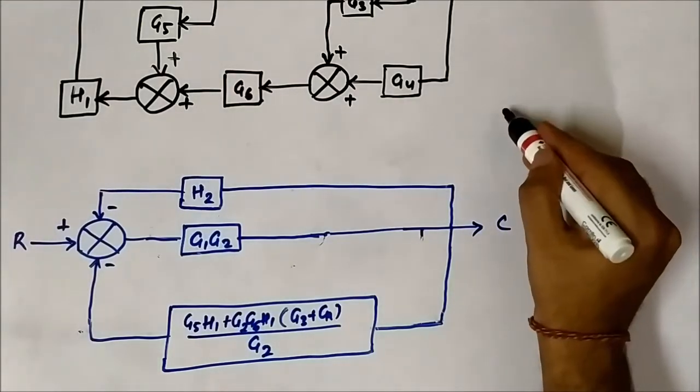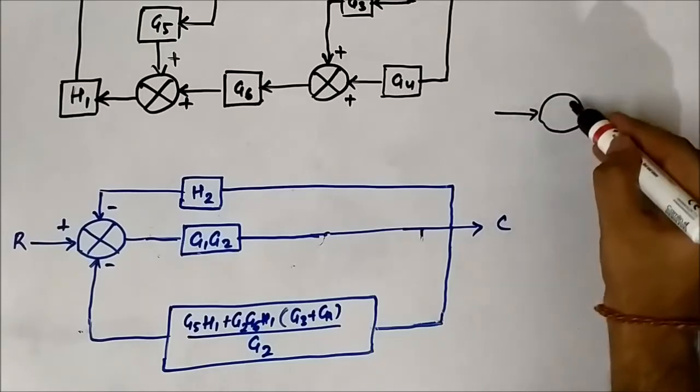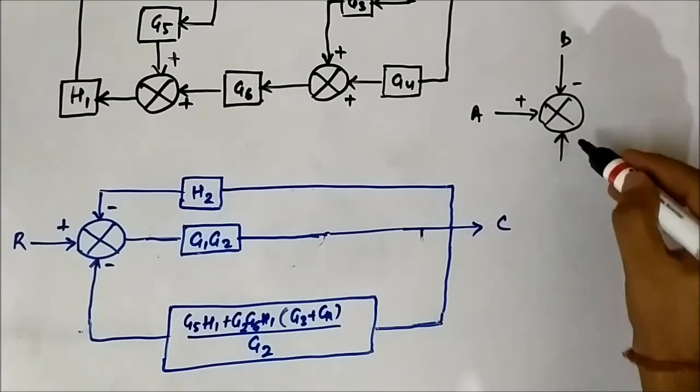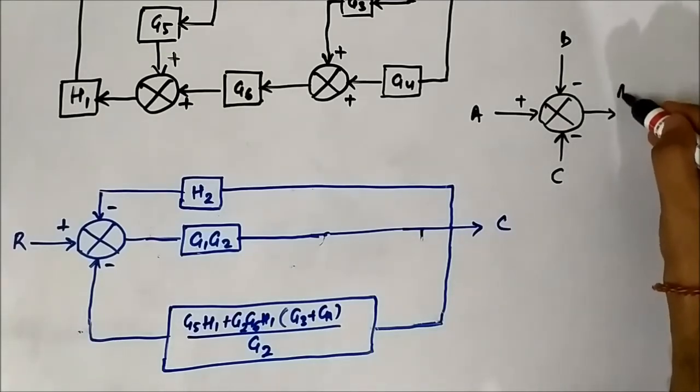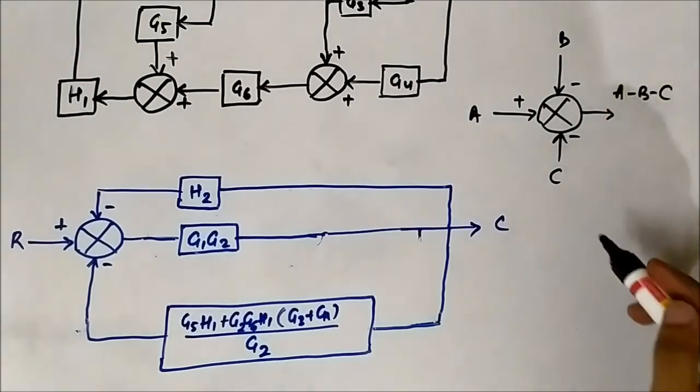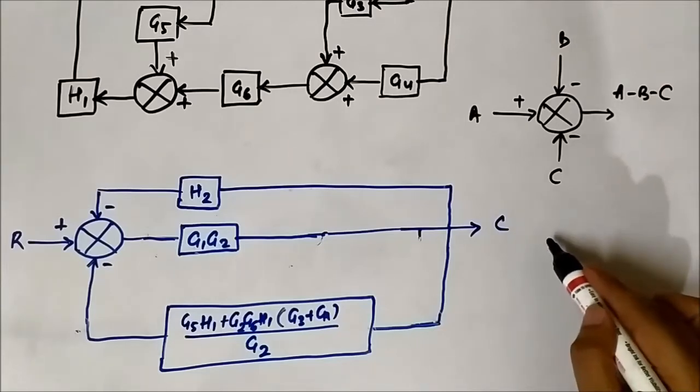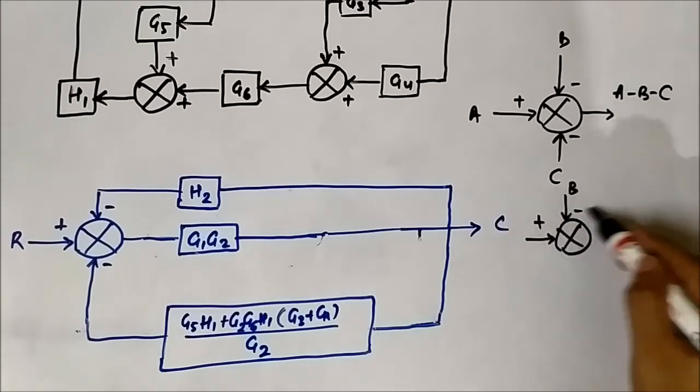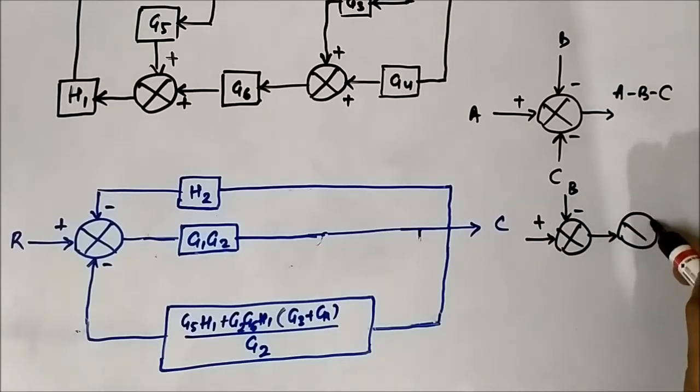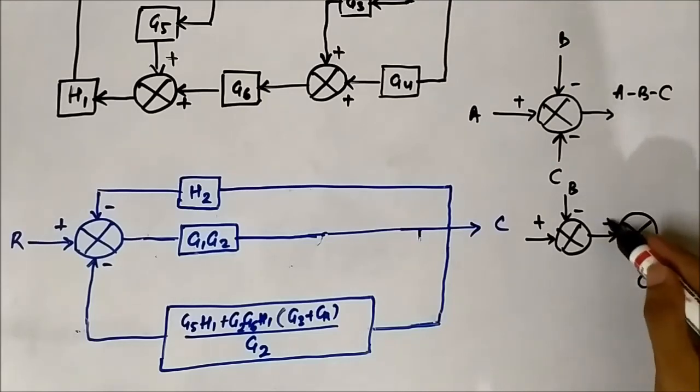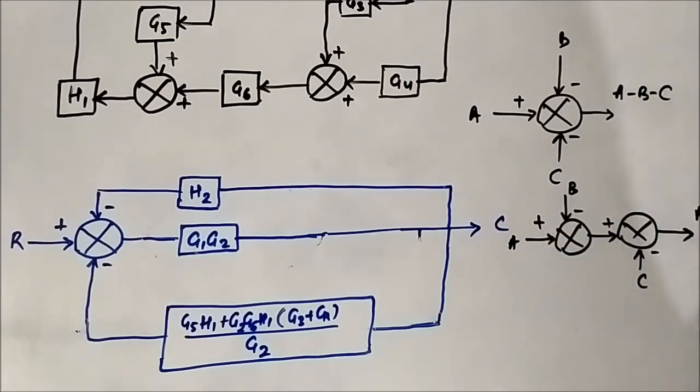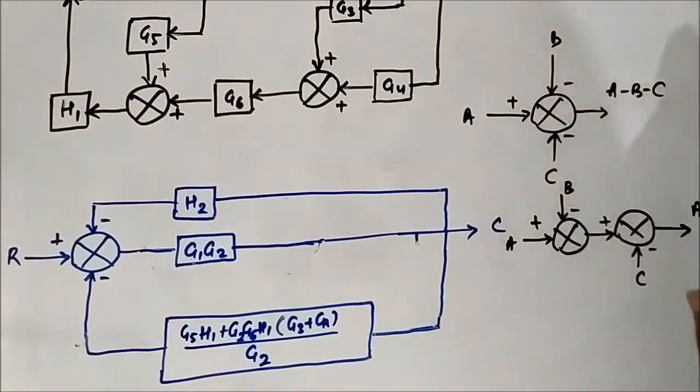For doing that, we can do it in this way. Suppose we have a summing point like this. The input is A, here it is B, here it is C. So the net output is A minus B minus C. If we want to split this summer, we can do it in this way: the same thing, A minus B, then A minus B minus C. So the same result we will get. We have divided this one summer into two summers depending on the sign convention. Like that we will do it here.